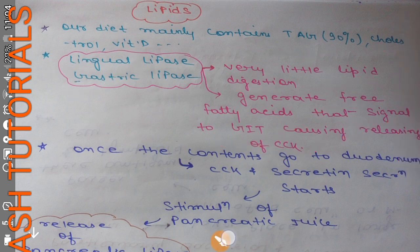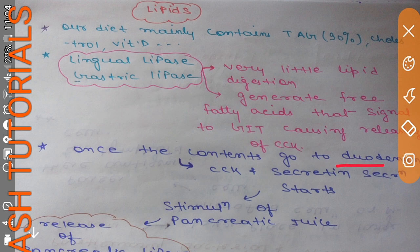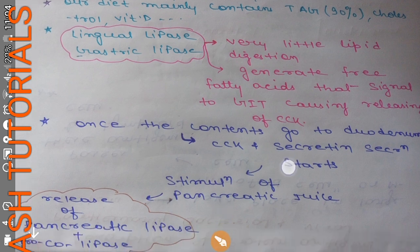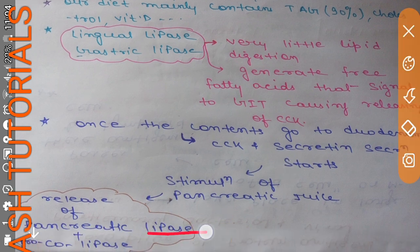Once the contents move to the duodenum from the stomach, CCK and secretin are stimulated. This stimulates pancreatic juice secretion, which causes the release of pancreatic lipase along with pro-colipase.